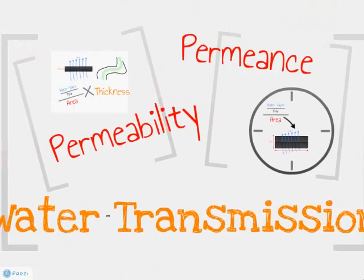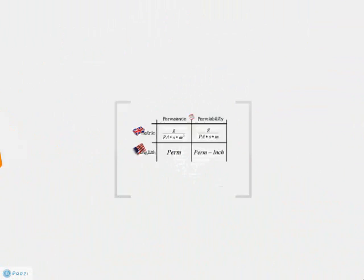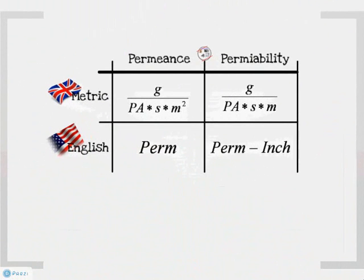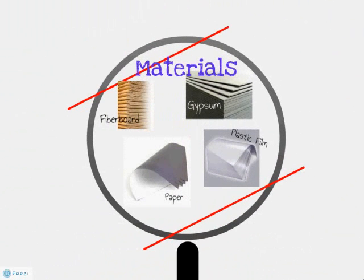Water vapor permeability is the arithmetic product of permeance and unit thickness, and has the units of perm inch or grams per pascal times seconds times meter. Permeance is used in performance evaluation, while permeability is a property of a material.